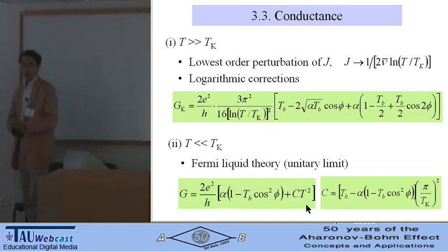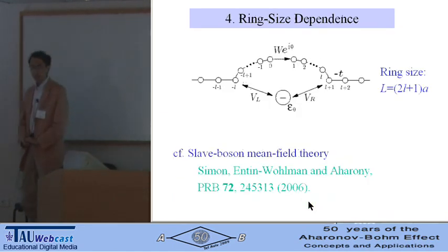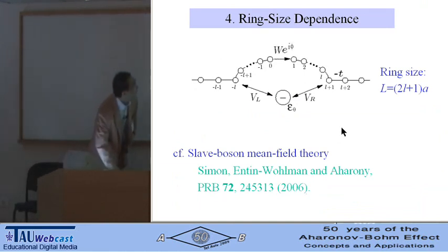Until now, I discussed the case of a small limit of AB ring. But we can extend our calculation to the case of finite ring size. We adopt this model. The ring size is denoted by capital L. A similar model has been examined using the slave-boson mean field theory by this group.